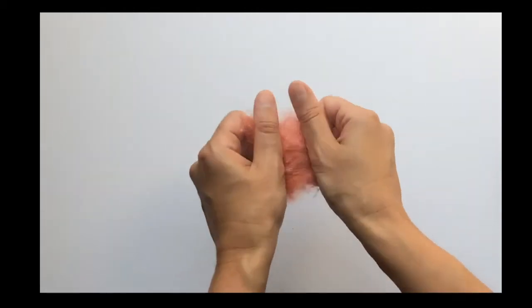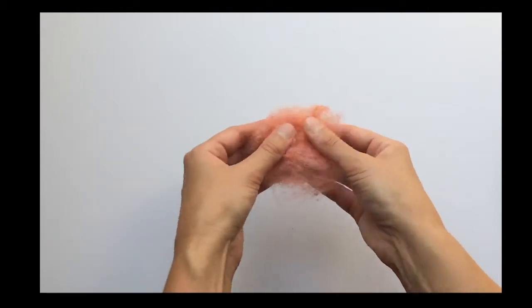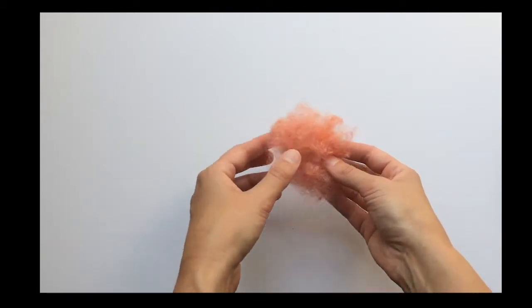I think that looks about done. So there's our nice color. I'm going to be using this to make the needle felted heart in the next video.